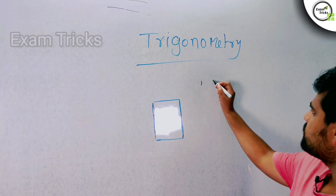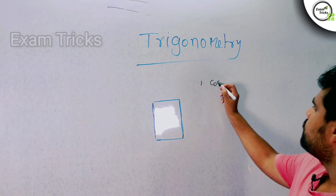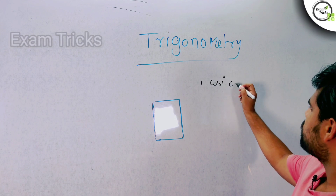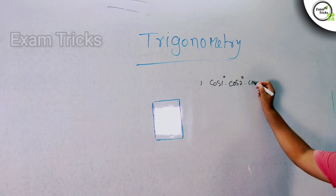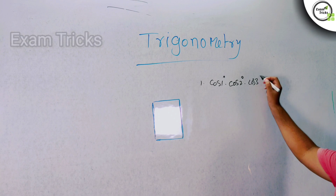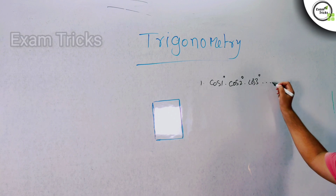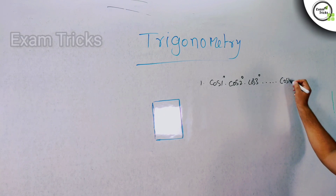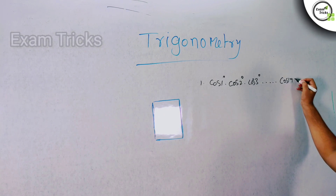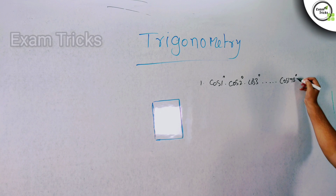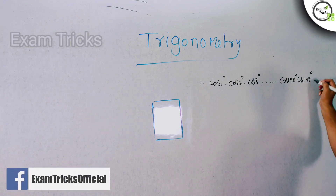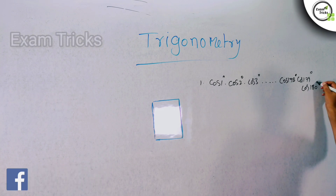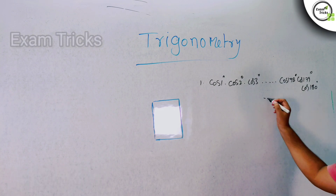The first question is: cos1° · cos2° · cos3° · ... · cos178° · cos179° · cos180°. So, we will work through this.